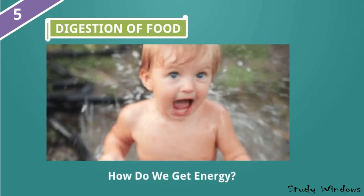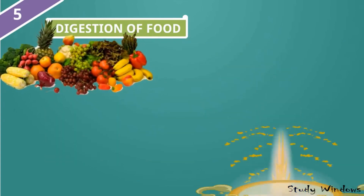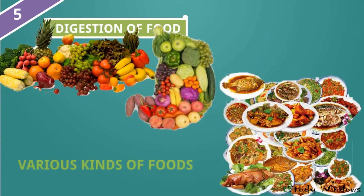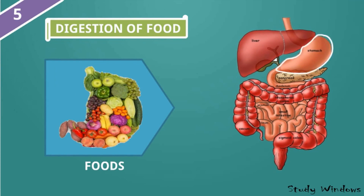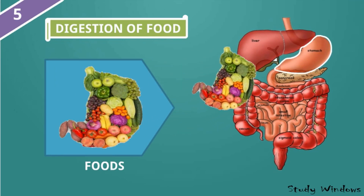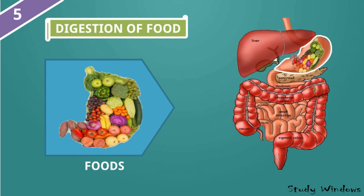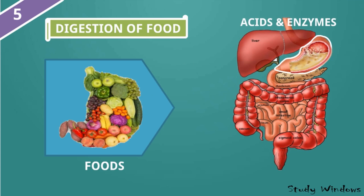Digestion of food. How do we get energy? We take various kinds of food daily. This is the food and this is the stomach. We take food through our mouth to the stomach, and with the help of acids and enzymes the food is degraded — changed into a semi-liquid — and then it passes through the intestines.